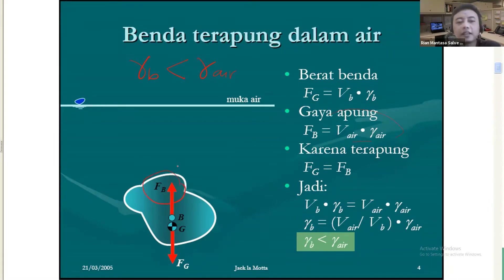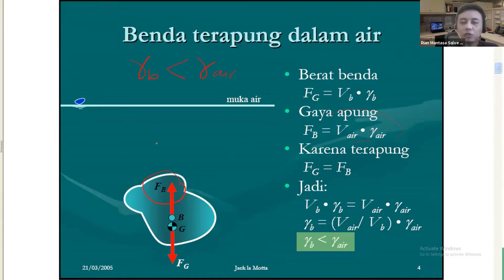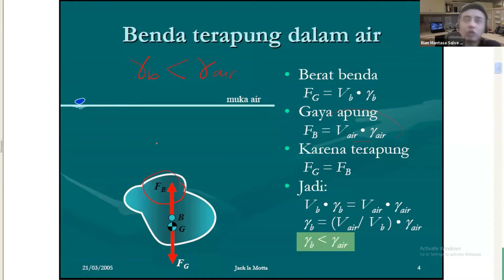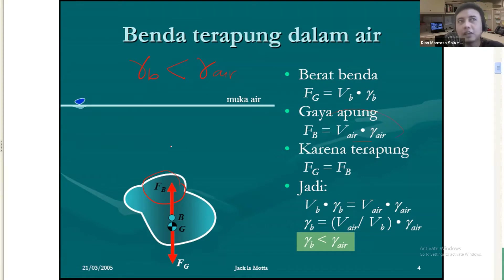FB ini adalah gaya angkat yang dihasilkan oleh air. Kalau kalian membayangkan ketika ada suatu kolam, terus kalian menenggelamkan misalnya helm, atau merendamkan suatu botol. Kalau misalnya botol yang kosong itu, berat jenisnya kurang dari berat jenis air, sehingga dia dapat mengapung. Intinya gaya angkat airnya lebih besar dibandingkan dengan berat benda itu sendiri.